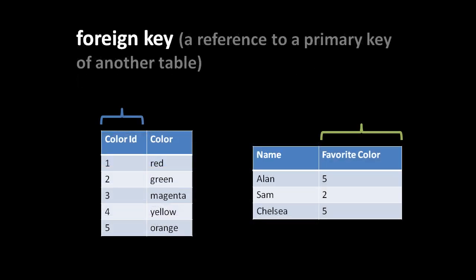A foreign key is simply a reference to a primary key of another table. Here we have a table of colors and a table of people. The color table has an id column designated as its primary key — values in these id columns are generally auto-generated by the database. For simplicity here the values start from one to five, but in a real database the auto-generated ids aren't necessarily small numbers starting from one.